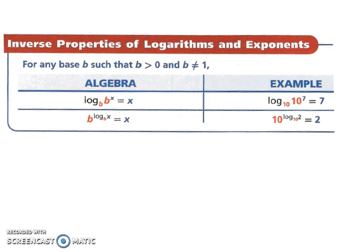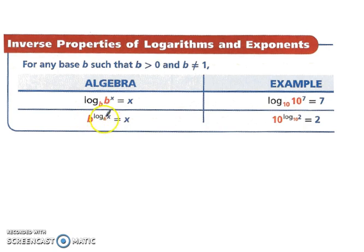Now let's look at inverse properties of logarithms and exponents. For log base b of b to the x, both the base and the argument share the same base, so when you simplify it equals the exponent x. Conversely, b to the log base b of x also simplifies to simply x.